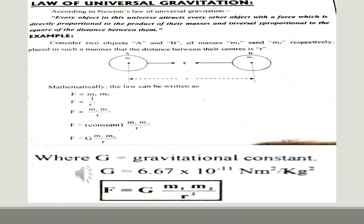The Law of Universal Gravitation was discovered by Sir Isaac Newton in the year 1686. According to Newton, this law is true not only for the heavenly bodies, but is also true of any bodies in this universe.